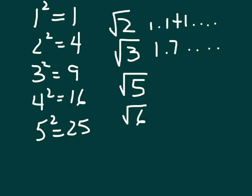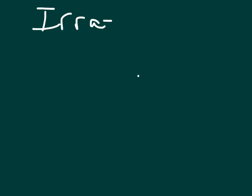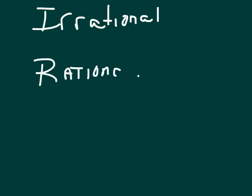And what those numbers are called are called irrational numbers. Now, irrational means not rational. Remember, rational numbers were ones that could be written in the form of A over B.